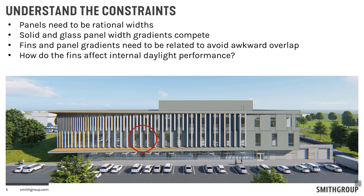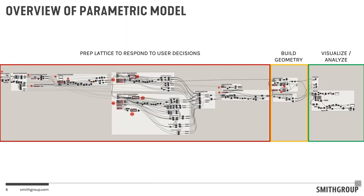We thought we could capture all these constraints in the code and allow the design team to see what that means. Rather than a slow iterative process — where you come back a couple days later and say that's not quite what I needed — we wanted the parametric model to act as a collaborative design environment. Critically, we wanted to inform the daylighting while this was happening, so that we understood the performance of these decisions alongside aesthetics and buildability concerns.